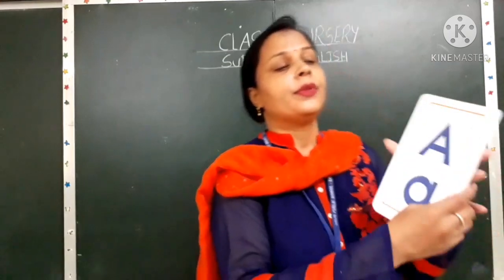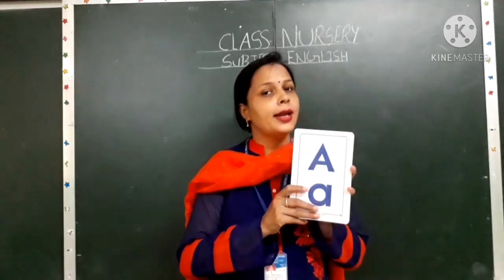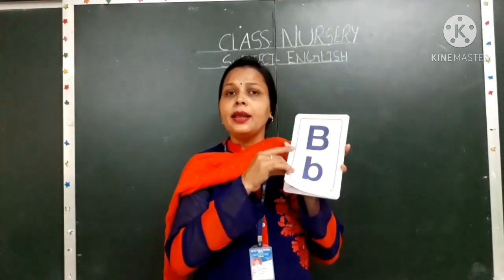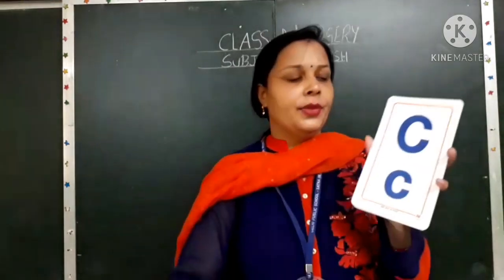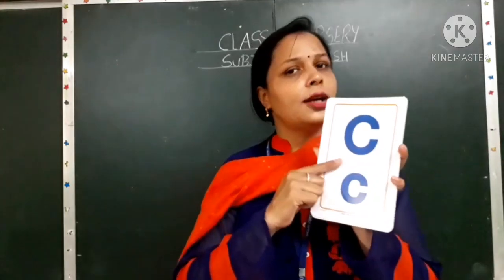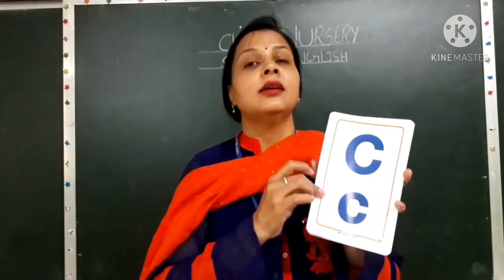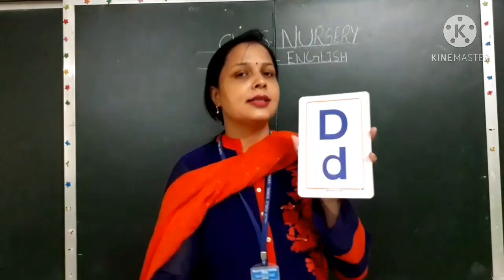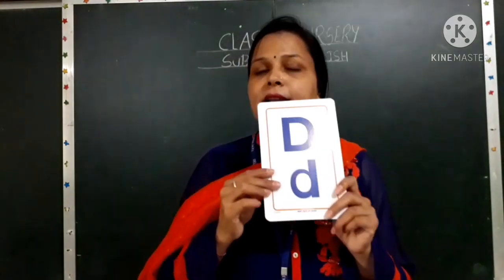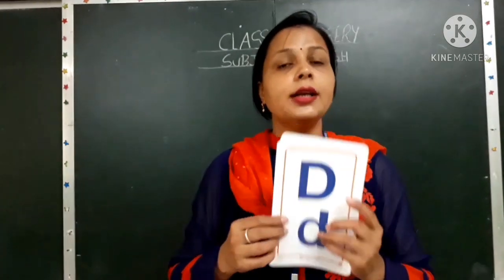Now children, look here. Which letter is this? This is letter A. And the sound of A is 'a'. This is letter B. The sound of B is 'b'. This is letter C. Which letter is this? Yes, this is letter C. And the sound of C is 'k'. This is letter D. Which letter is this? This is letter D. The sound of D is 'd'.